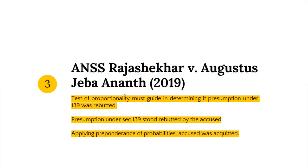Next is Ans Raj Shekar versus Augustus Jayba Anand, 2019. Here the accused successfully rebutted the presumption under Section 139 on the basis of pre-ponderance of probability. The complainant gave two different versions of the amount, which raised doubt. On the basis of the accused's rebuttal, which was on the pre-ponderance of probability standard, the pre-ponderance of probability favoured the accused more than the complainant because the complainant didn't prove anything. So the accused was acquitted on his rebuttal.